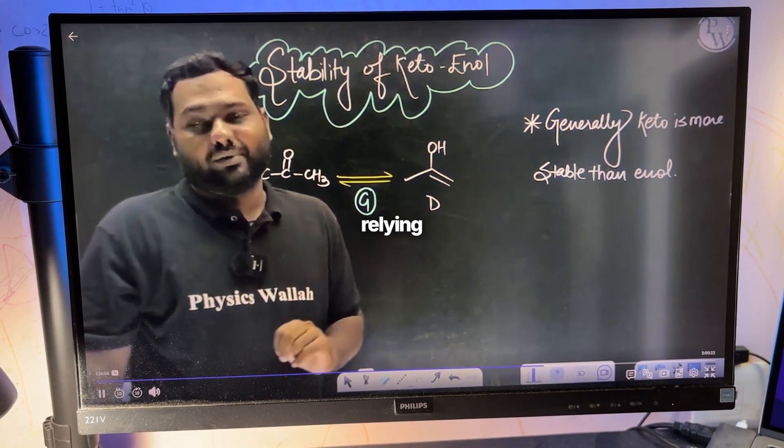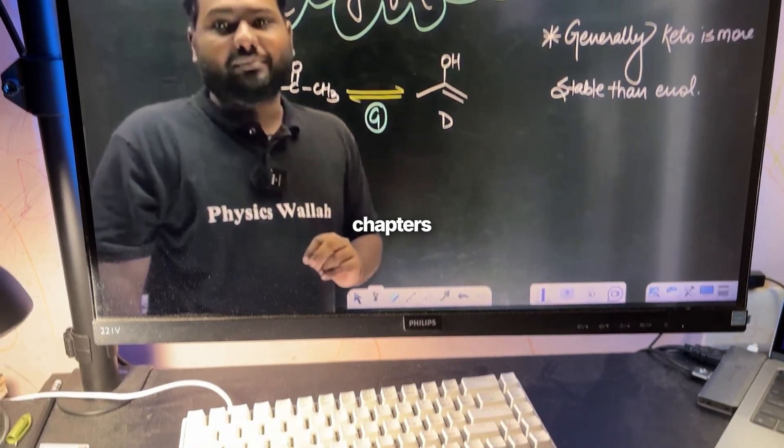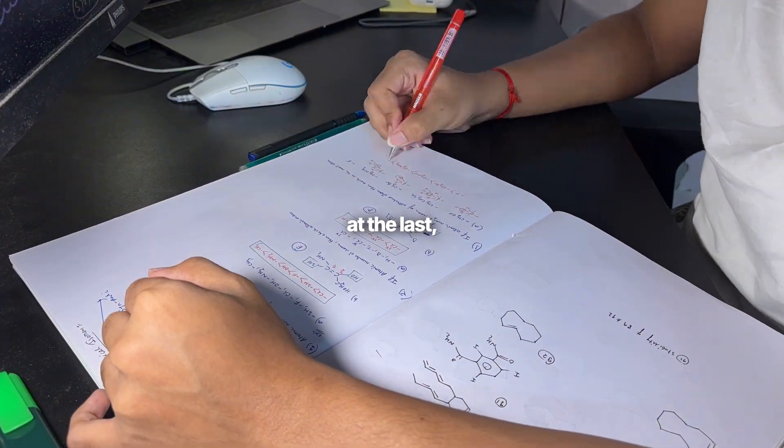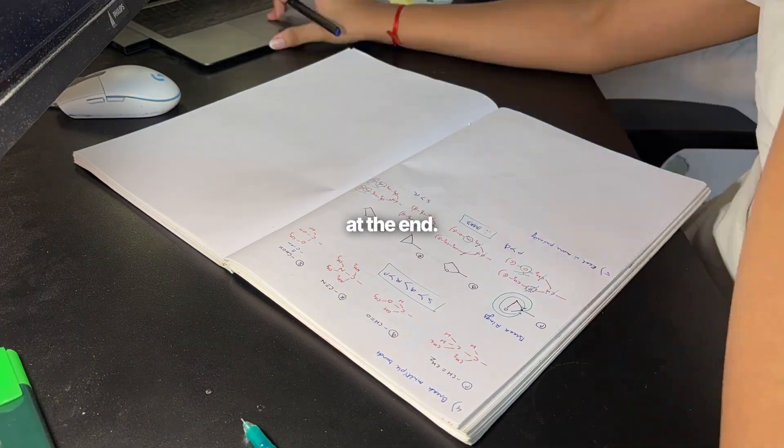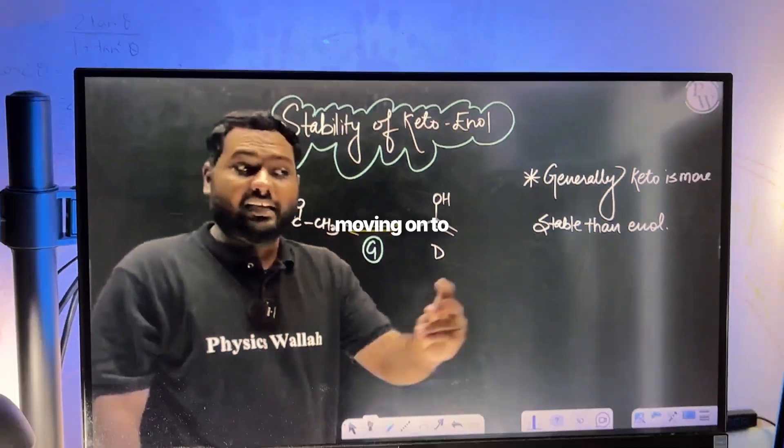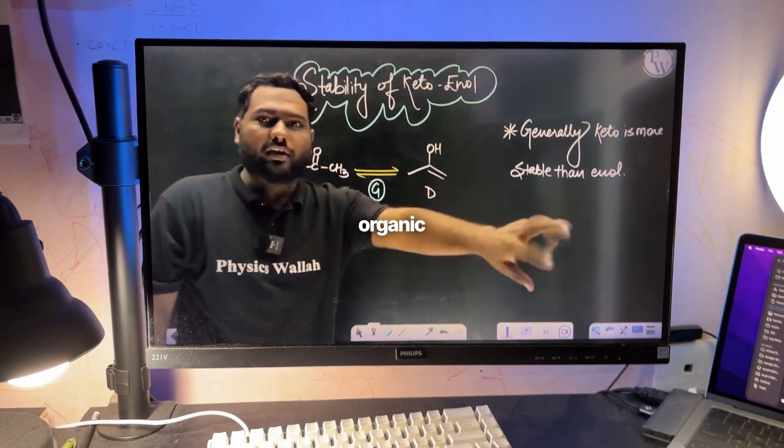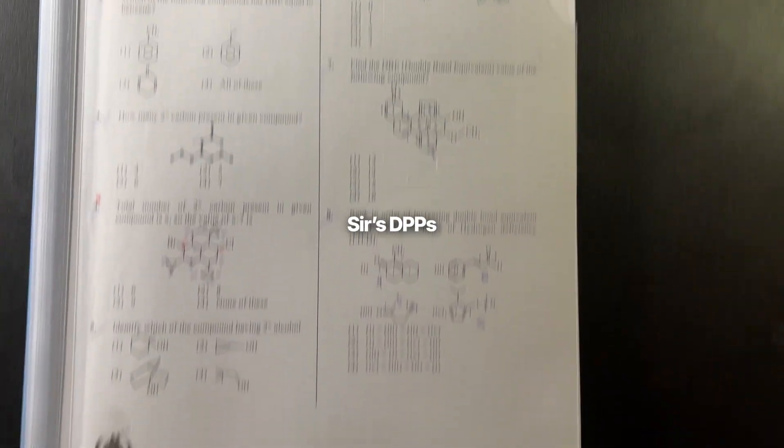For question practice, I'll be relying on PYQs while moving on to the following chapters. I've kept inorganic chemistry at the last, like my syllabus is almost done, but I forgot majority of it, so I will do it at the end. And yeah, for organic chemistry, I'll make sure to do RS sir's DPPs as well.